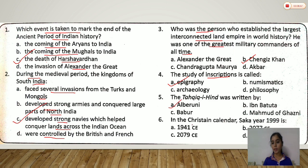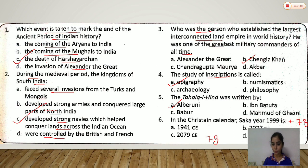Sixth question: in the Christian calendar, Saka year 1999 is — we know that when we add 78 to the Saka year, we get the Christian calendar year. So, when we add 78 to 1999, we get 2077. So, the correct option is B — 2077 CE.